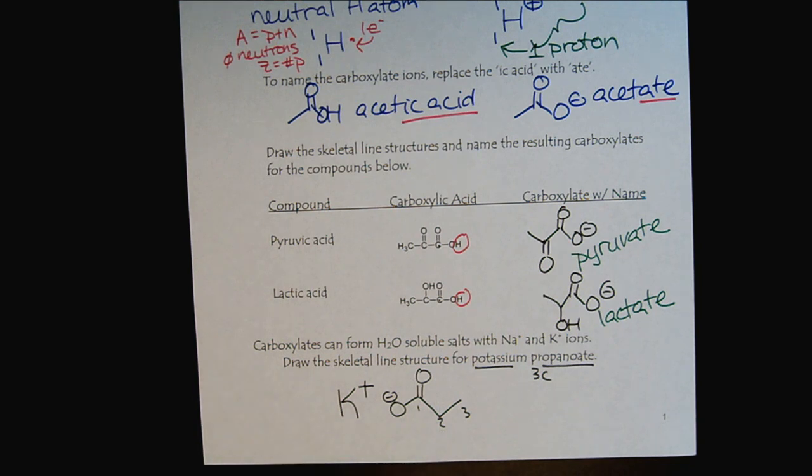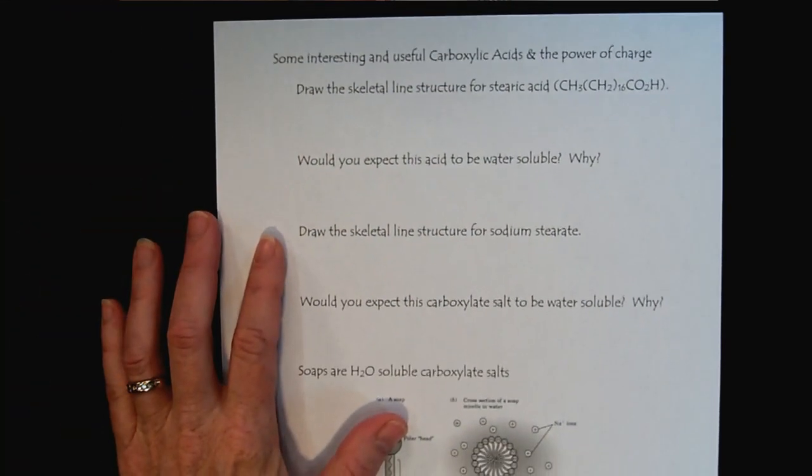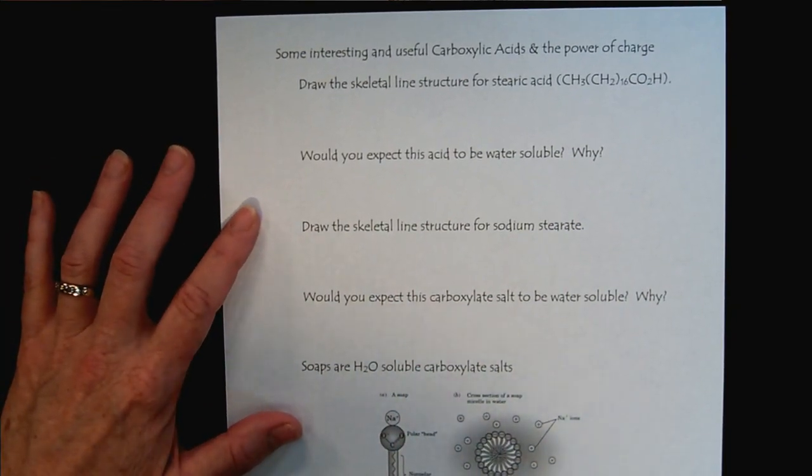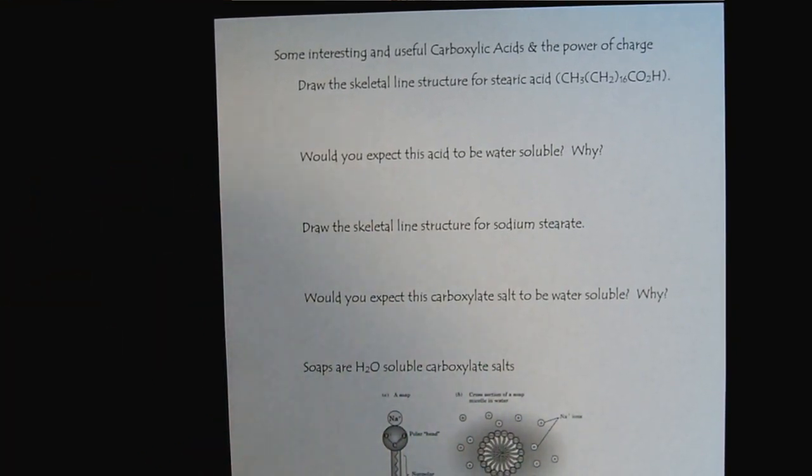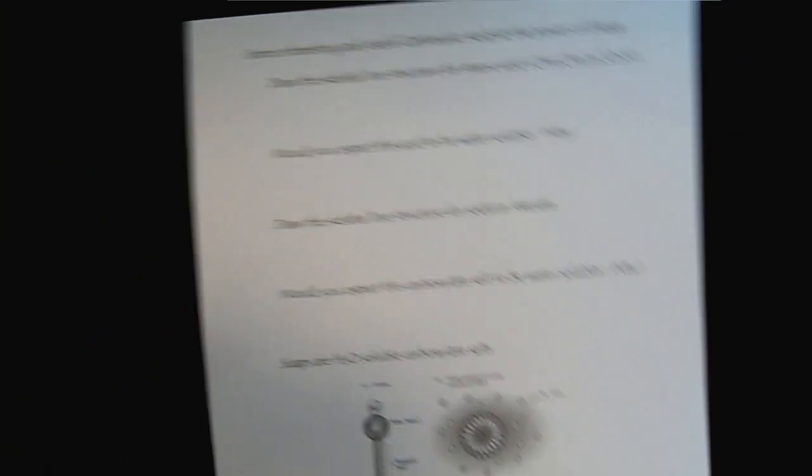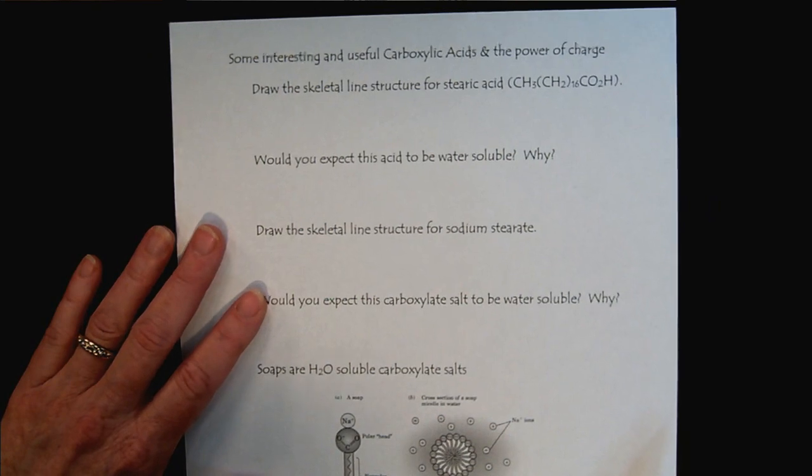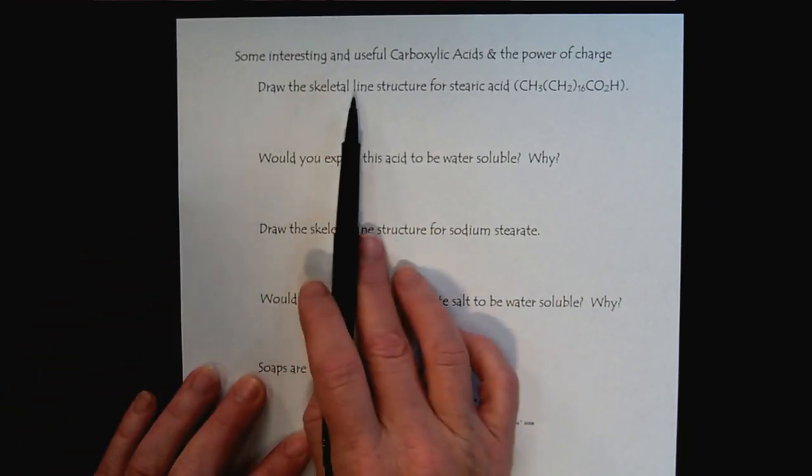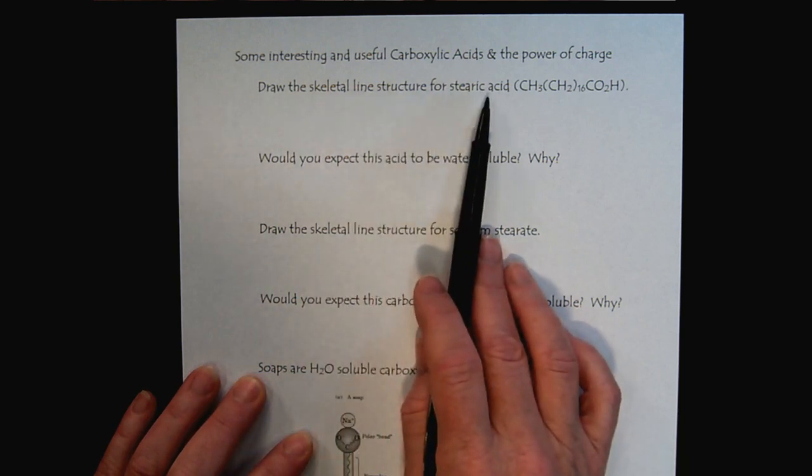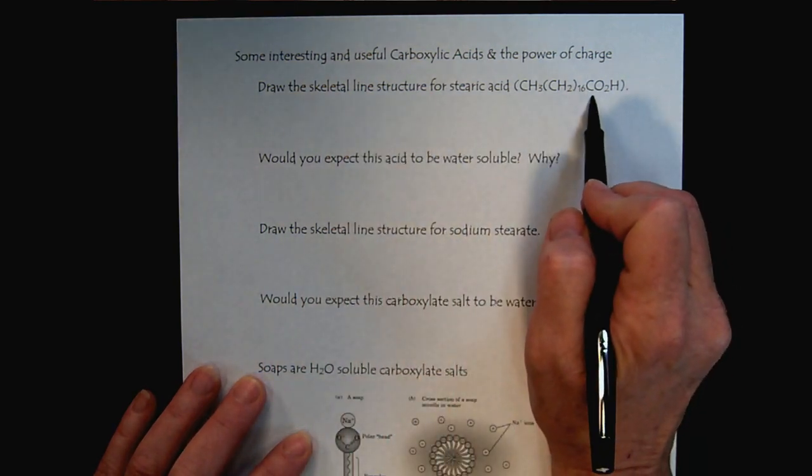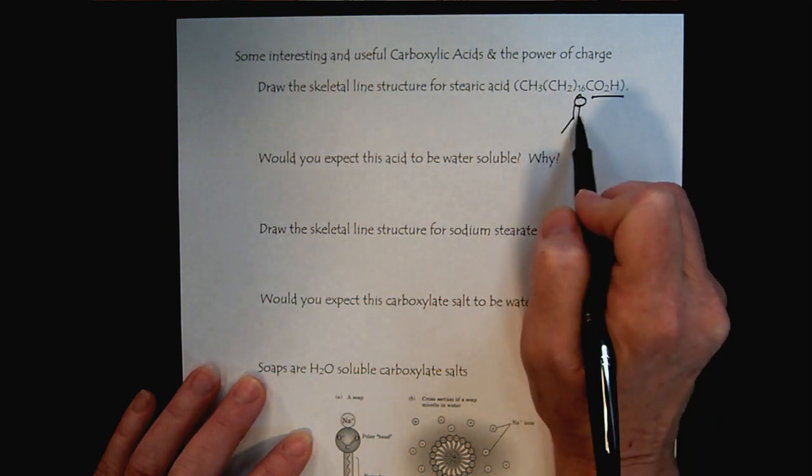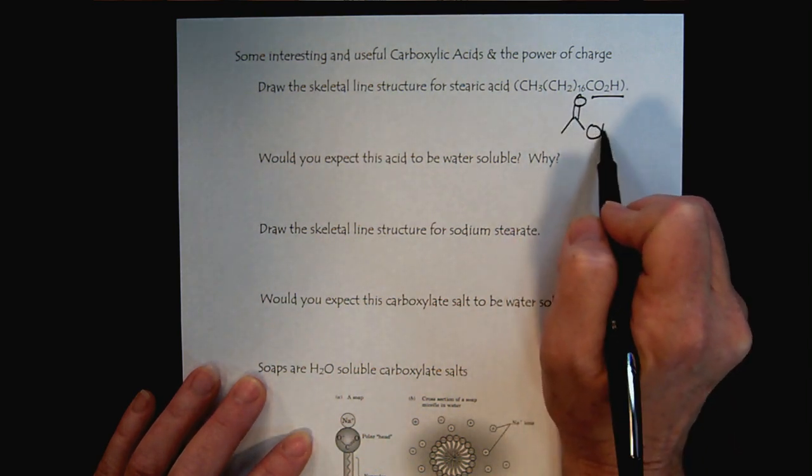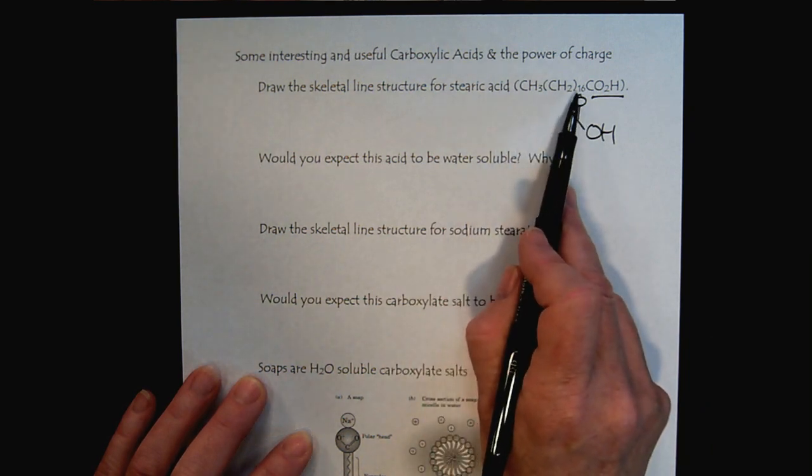So now that we understand the language to describe the acid-base chemistry of carboxylic acids, let's practice doing some reactions here. And these are pretty useful, and they're also a good example of the power of charge. So let's draw the skeletal line structure for stearic acid. So here's our carboxylic acid. And notice this is going to be a fatty acid. We have a 16-carbon chain. Well, really it's a 17-carbon chain.